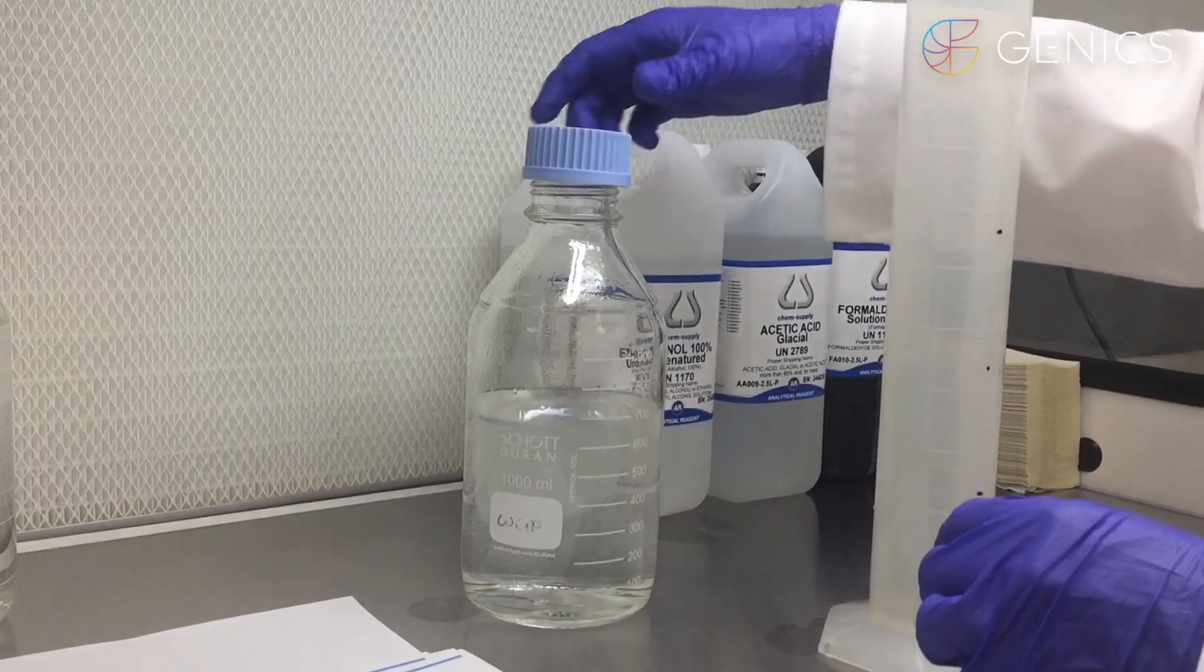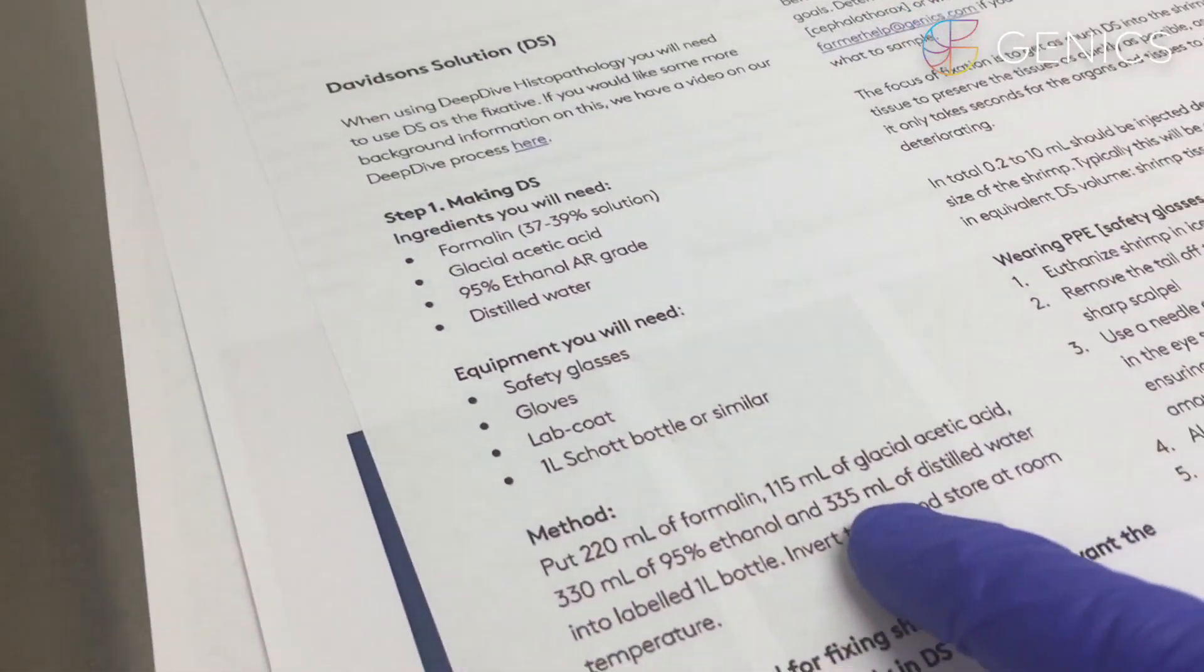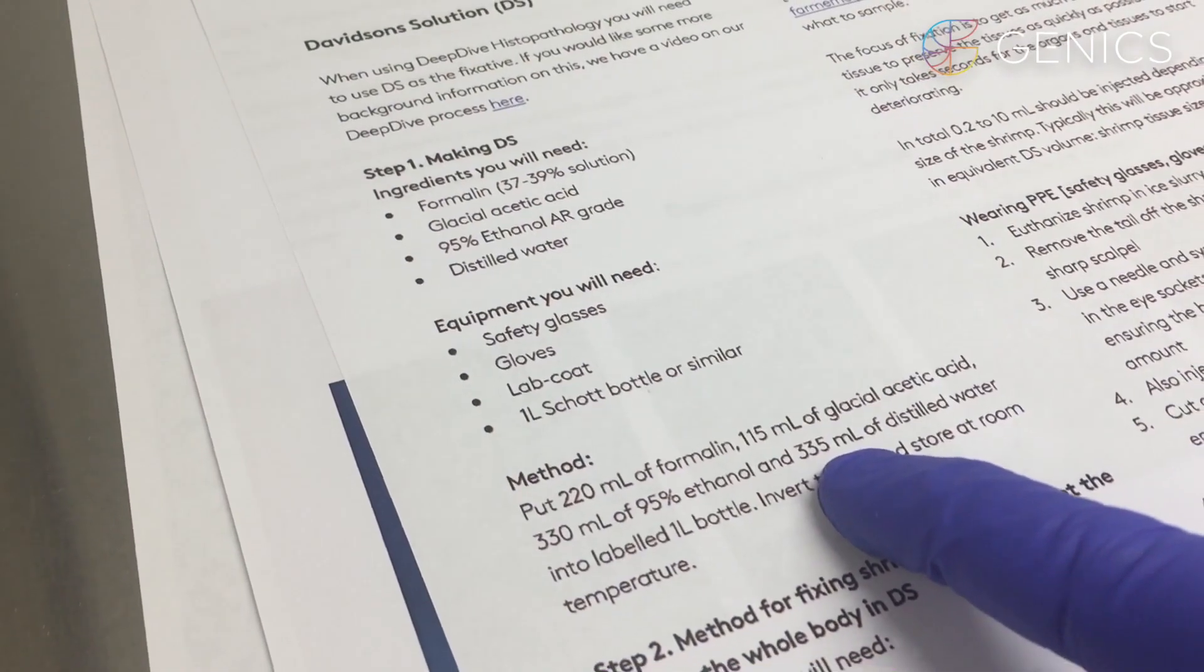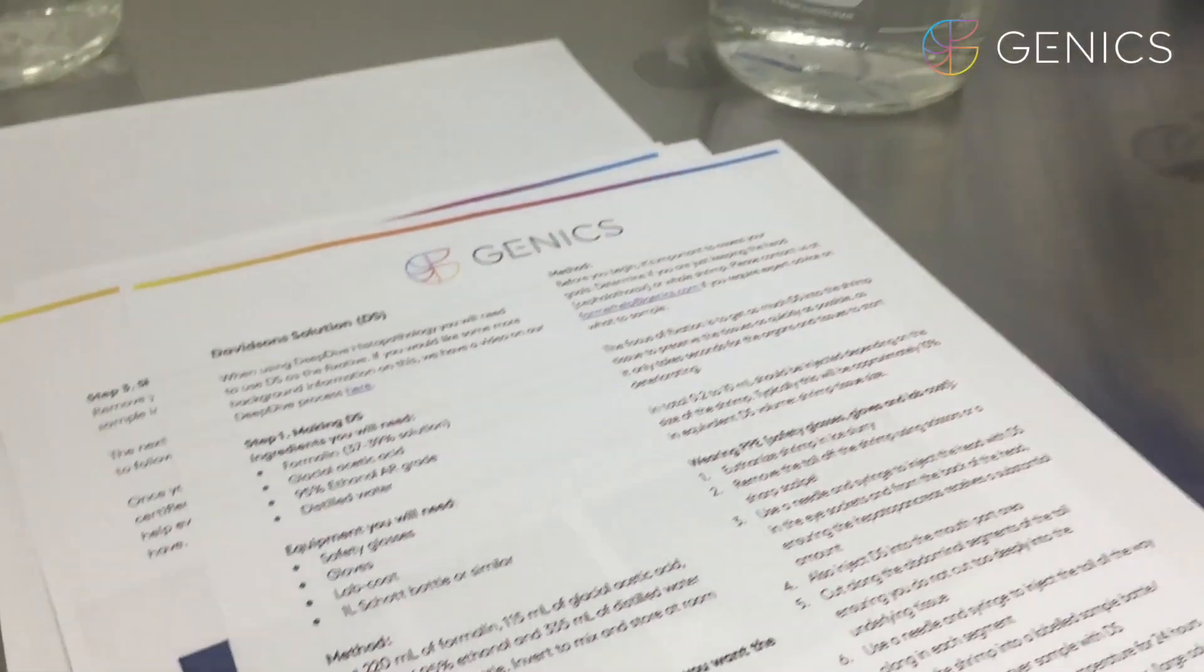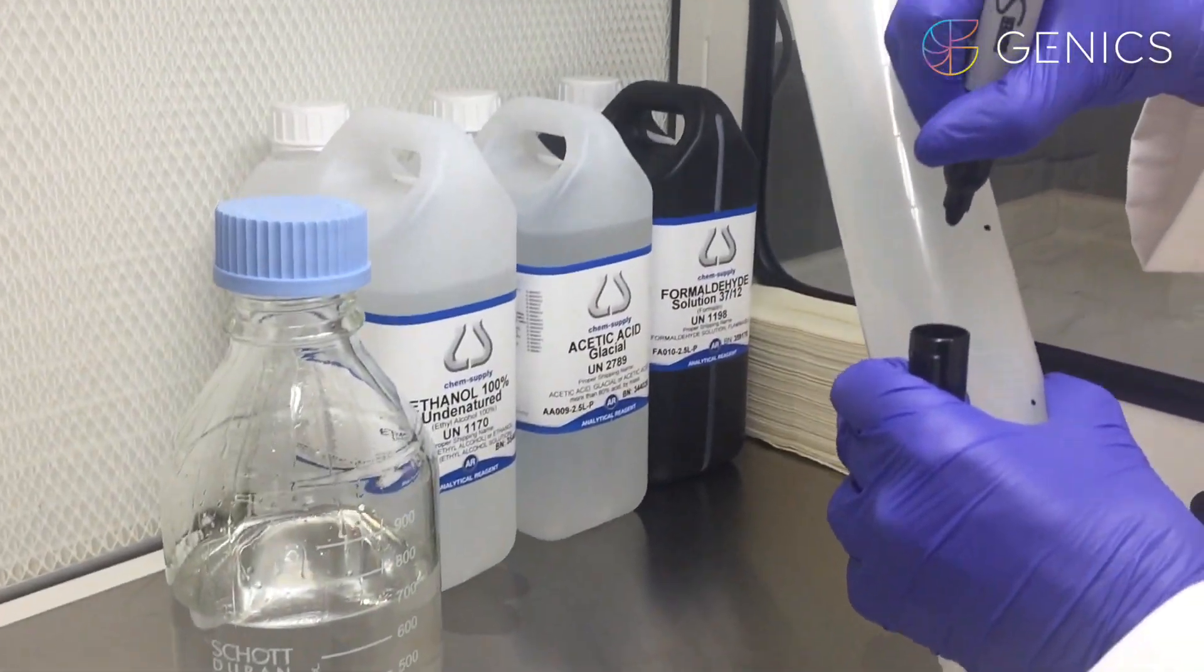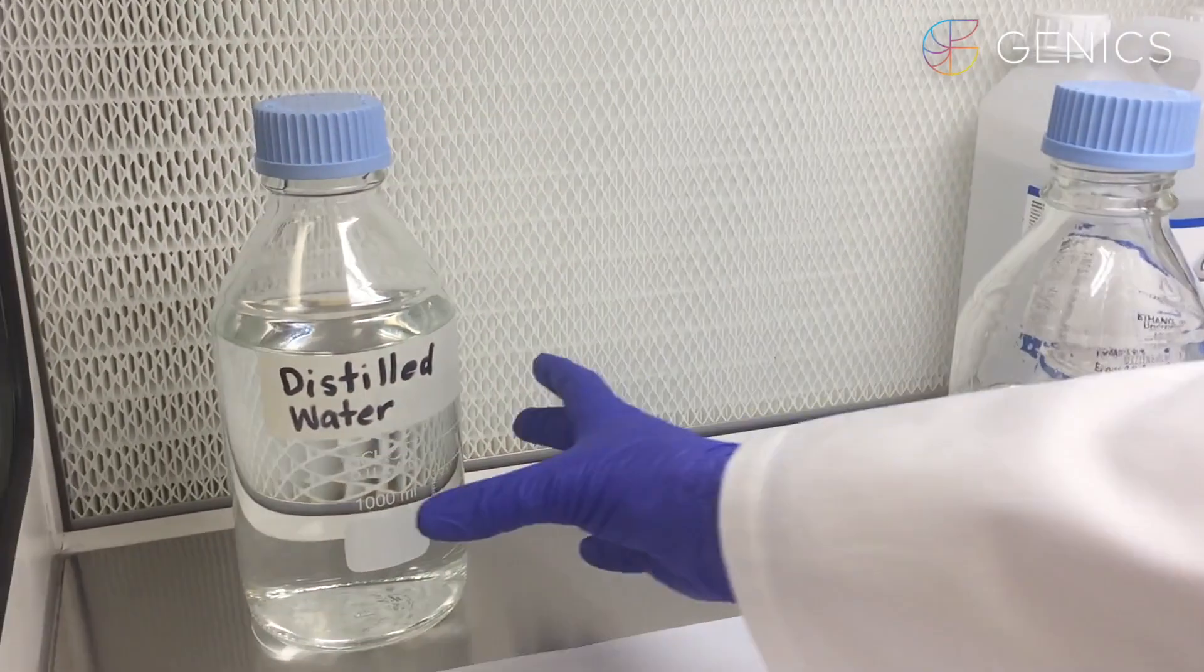Lastly, the fourth thing that we're putting in is our 335 milliliters of distilled water. We can mark our 335 here. We have our distilled water.